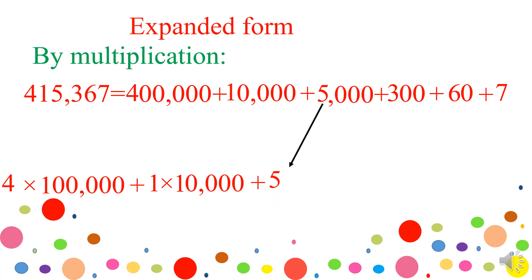Five. Five equals five times one. And I put the zeros beside the one.